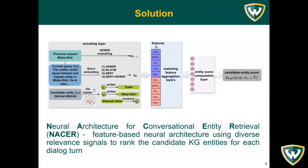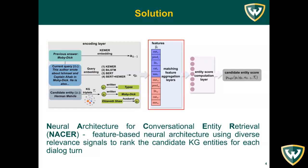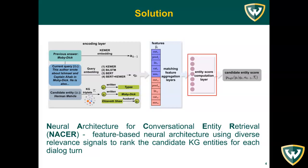As an initial solution to CER-KG, we propose NACER, a neural architecture for pointwise learning to rank of candidate answer entities, which consists of three layers: an encoding layer, matching feature aggregation layers which aggregate the relevant signals captured by various semantic and lexical features, and a candidate entity score computation layer.